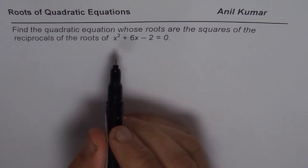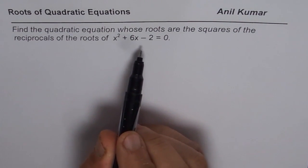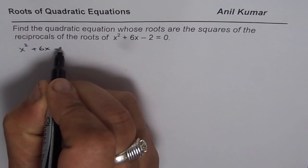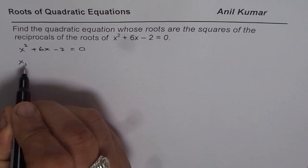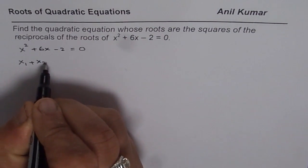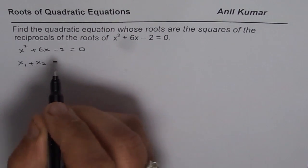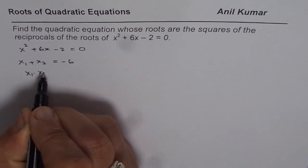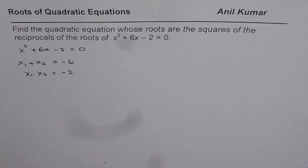Let us write down the sum and product of roots of the given equation, and then we'll find the new equation. We are given the equation x squared plus 6x minus 2 equals to 0. Let x1 and x2 be the roots. Sum of roots x1 plus x2 equals minus b by a, that is minus 6. Product of roots x1 times x2 equals c by a, which is minus 2.